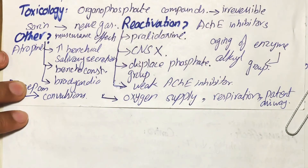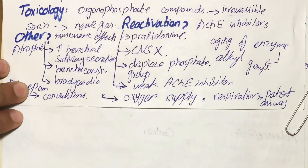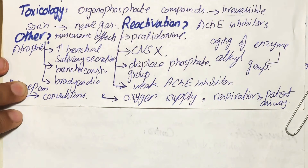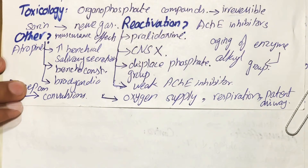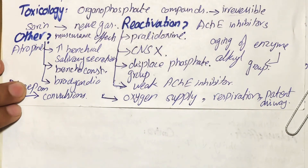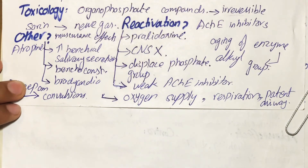This is how we deal with toxicity caused by organophosphate compounds, which are irreversible inhibitors that cause cholinergic crisis. This cholinergic crisis can be reversed by several methods discussed in this video.